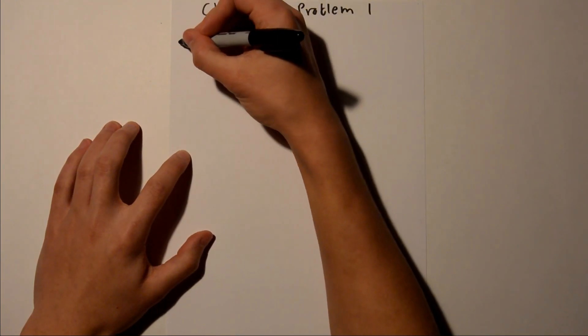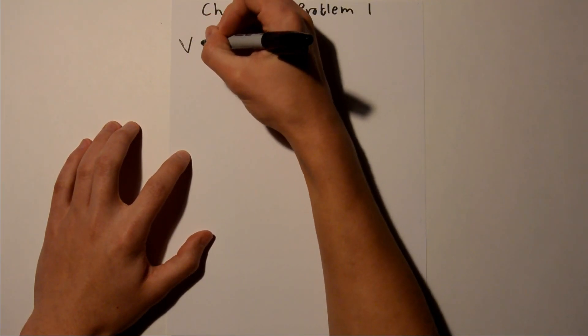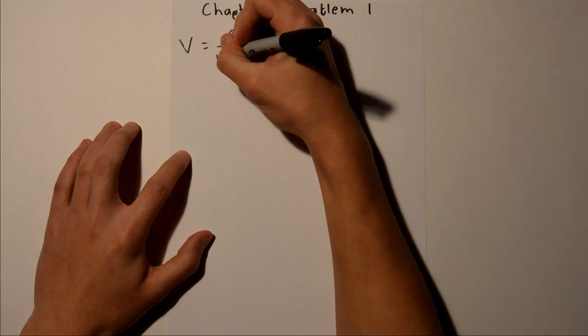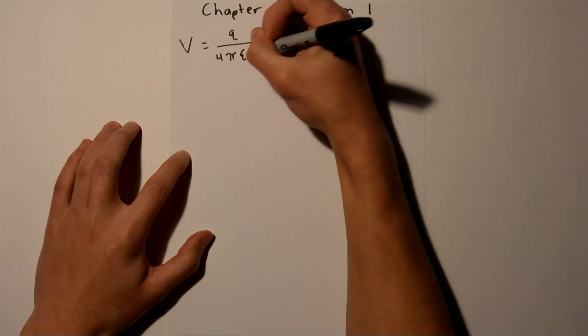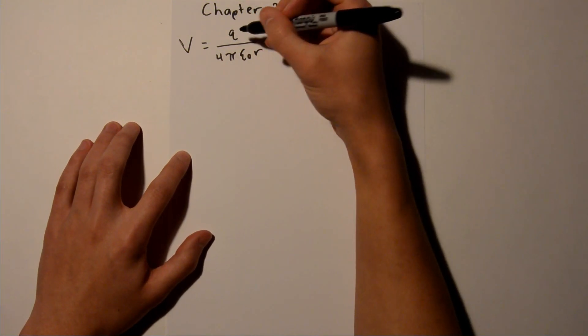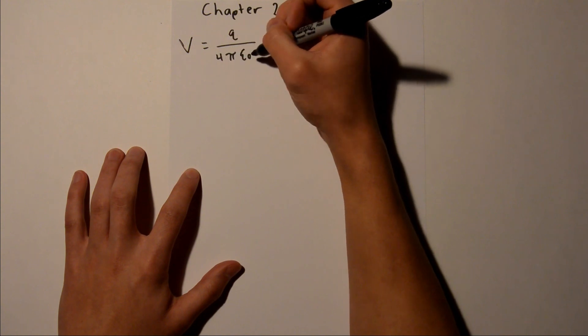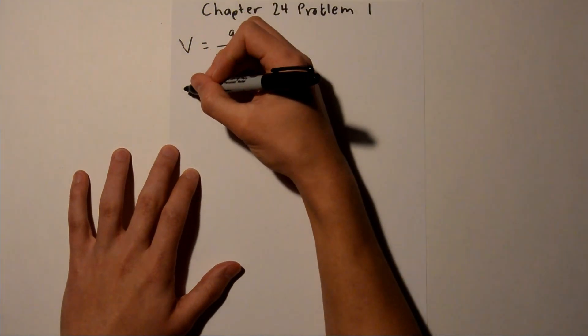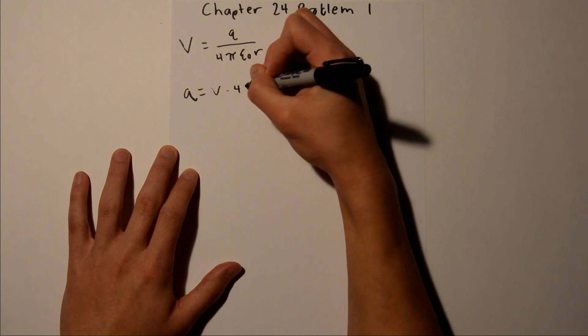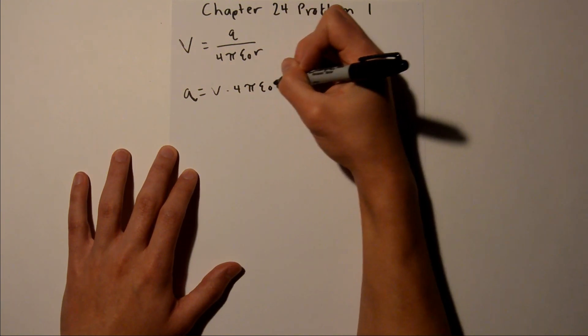So, we know that V, or potential, is equal to Q, or charge, over 4πε₀r. And since we need to find charge, we can multiply both sides by 4πε₀r, so we have Q equals V times 4πε₀r